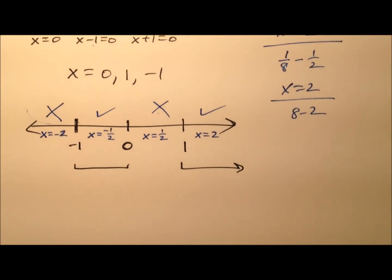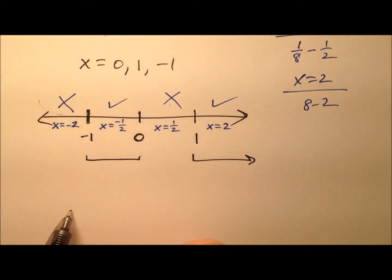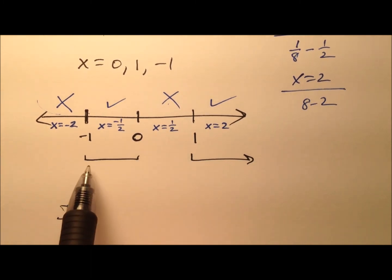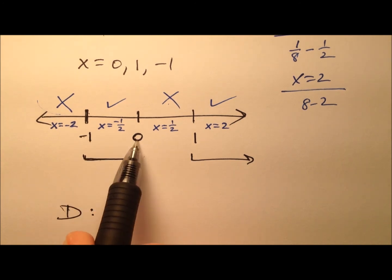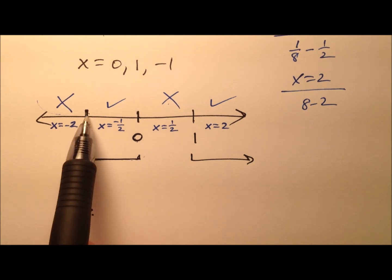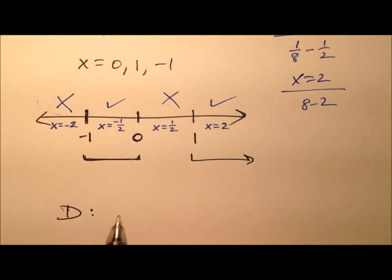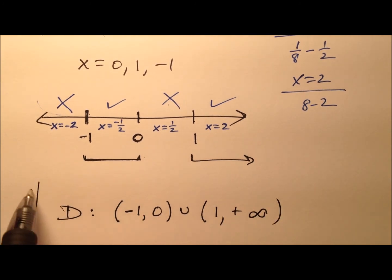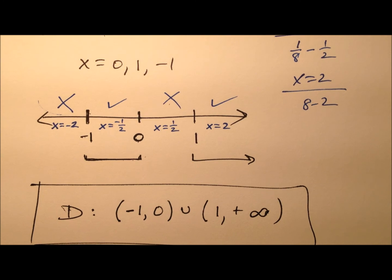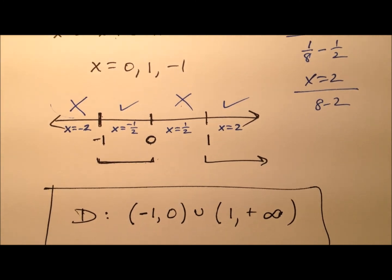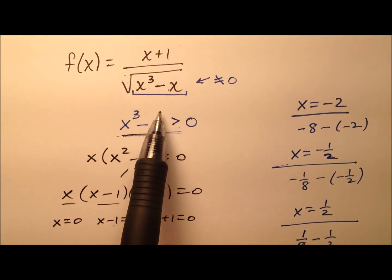We can write this domain in interval notation. We have two intervals from negative one to zero, but recall that negative one and zero, these endpoints, are not acceptable points themselves because they result in division by zero, so we'll use parentheses. Negative one to zero in parentheses, union one to positive infinity. Here is our domain written in interval notation. This is the domain for this function.